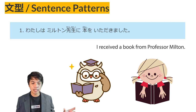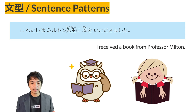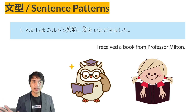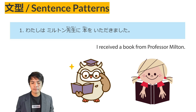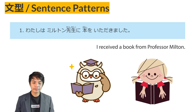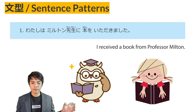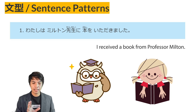Watashi wa Merton sensei ni hon o itadakimashita. Be careful when choosing between moraimashita and itadakimashita. In this sentence, the giver is a sensei — a teacher — so you must be more polite. Merton sensei ni hon o itadakimashita follows the same pattern as watashi wa person ni object wo moraimashita, with particle ni marking the giver.